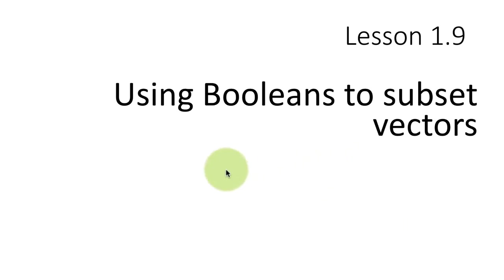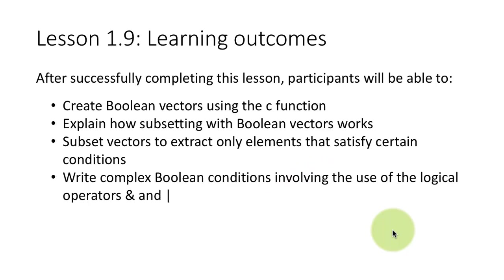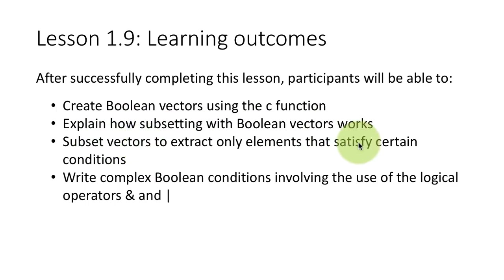We had already learned about Booleans in an earlier lesson. So after completing this lesson, you'll be able to create Boolean vectors using the C function, explain how subsetting with Boolean vectors actually works, and subset vectors to extract only the elements that satisfy certain conditions — for example, all elements below average, above average, less than 100, greater than 100, or less than 100 and divisible by 2. We'll also learn how to write complex Boolean conditions involving the logical operators AND and OR.